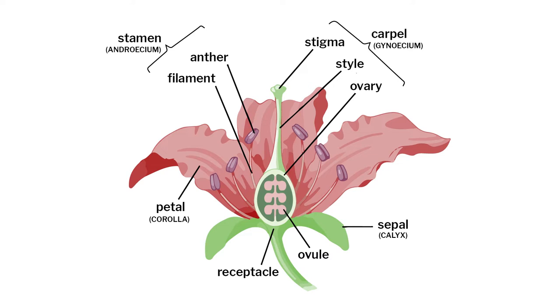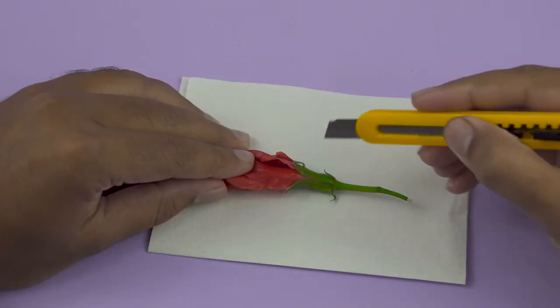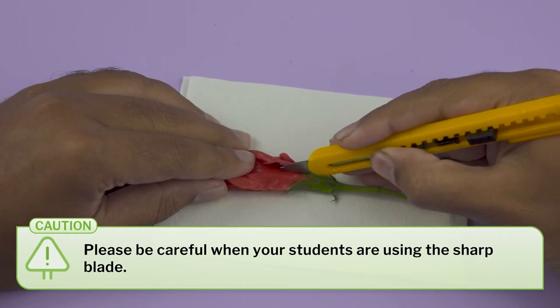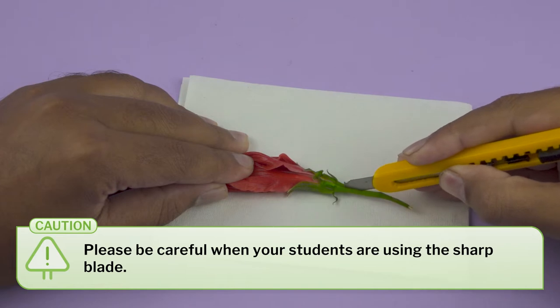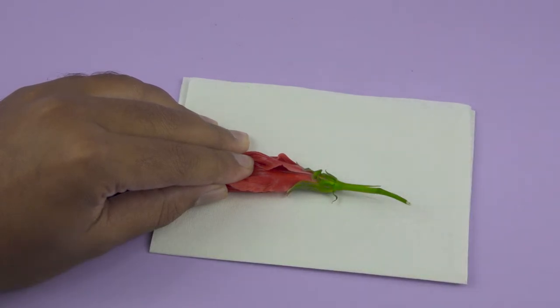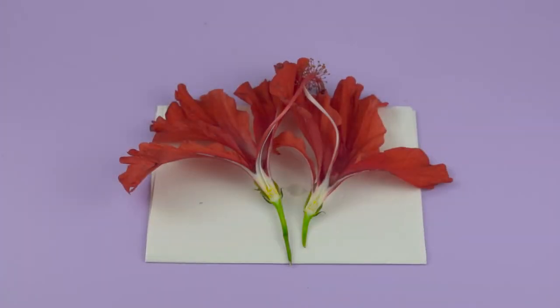Now, demonstrate an activity for getting to know the external and internal structure of the flower. For this activity, you will require a few hibiscus flowers and a sharp blade. You have to bisect this flower. Take a hibiscus flower and start cutting it from its tip using the sharp blade. Go on with this uninterrupted till the flower is cut into two halves and observe how it looks. Using this dissected flower, we can show different whorls of the flowers to the students and explain their functions.